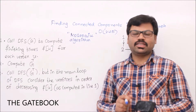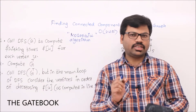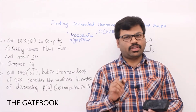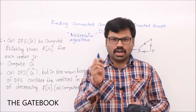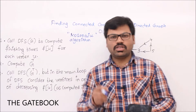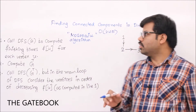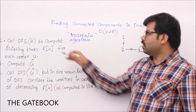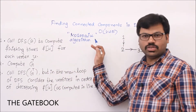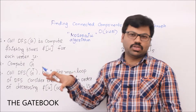Let's see how to find connected components in a directed graph. It is not as easy as finding connected components in an undirected graph. The time complexity was O(V+E) in undirected graphs; here also O(V+E), but it is a little bit more difficult to understand. This algorithm is proposed by Kosaraju, and is famously known as Kosaraju's algorithm.